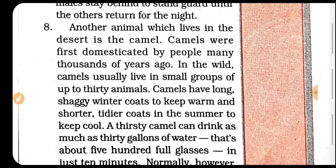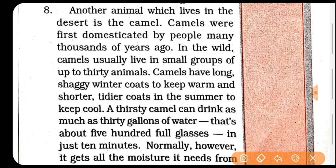Another animal — next jo animal hai woh hai camel. Camel jo hai woh desert animal hai. Camel ko sabse pehle logon ne thousands of years pehle domesticated banaya — ek gharelu paltoo jaanwar banaya. Wild camels usually live in small groups — jungli camels samuon mein rehte hain — at least 30 animals ek saath. Unki long shaggy winter coat hoti hai — sardi mein unke upar ka jo hair growth hai woh bahut zyada hota hai, ek coat ka kaam karti hai aur inhein warm rakhti hai. Aur garmi ke andar summer mein use short kar dete hain aur neat and clean coat ka kaam karta hai jis se woh keep cool rehte hain.